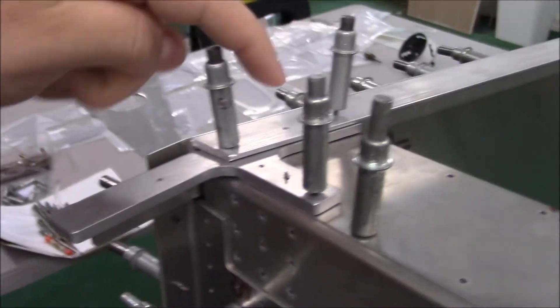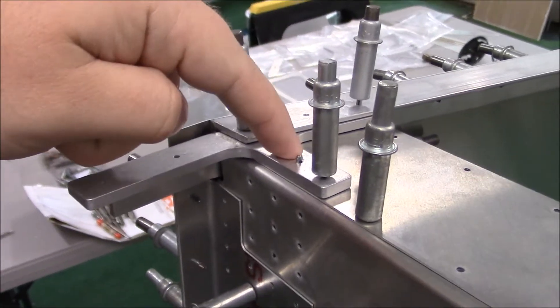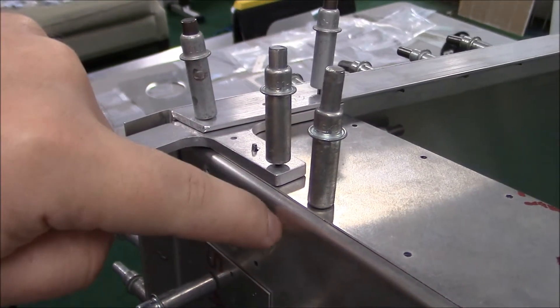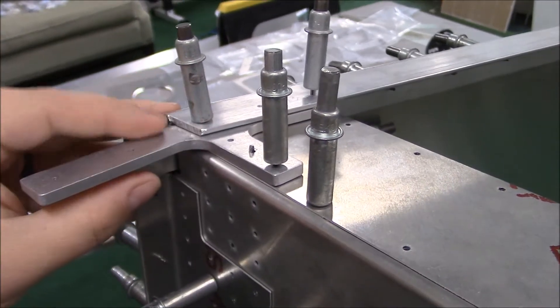So over here we have the longeron going through the gusset, going through the top of the box, going through the sides of the box. It's a really strong area right here.